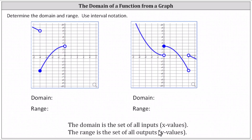For the first graph, we will assume this piece on the left continues. For the second graph, we'll assume the piece on the left and the piece on the right also continue. To determine the domain, we analyze the graph from left to right or along the x-axis. Notice the graph continues to the left indefinitely, and therefore the domain approaches negative infinity.